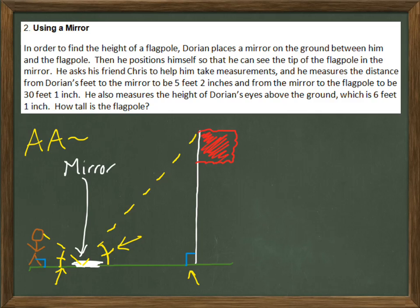Let's put some measurements on this. He asks his friend Chris to help him take measurements, and he measures the distance from Dorian's feet to the mirror to be 5 feet 2 inches. From the mirror to the flagpole to be 30 feet 1 inch. And he also measures the height of Dorian's eyes above the ground, which is 6 feet 1 inch. Notice that it has to be the height of his eyes, because it's where the light rays hit his eyes. That's the height that matters. We want to know how tall the flagpole is. That's x.